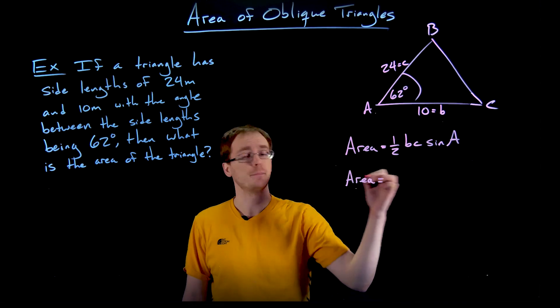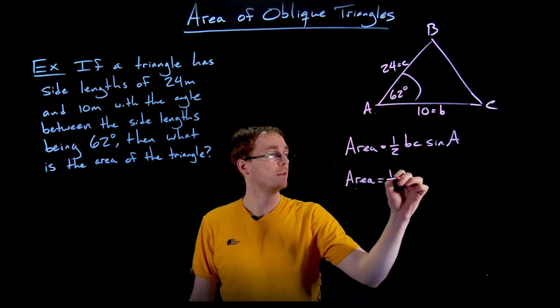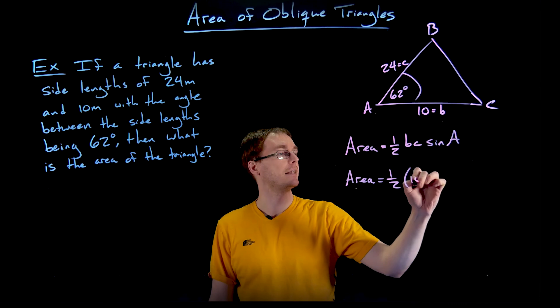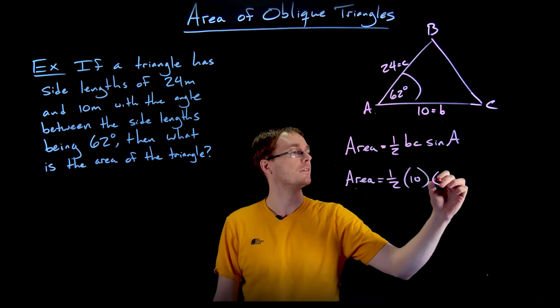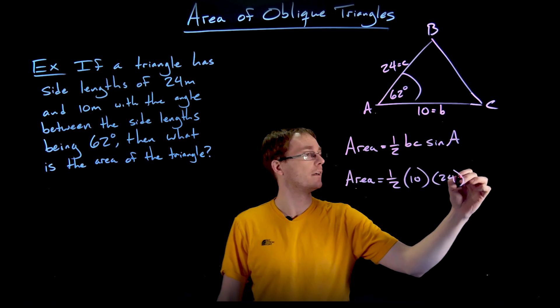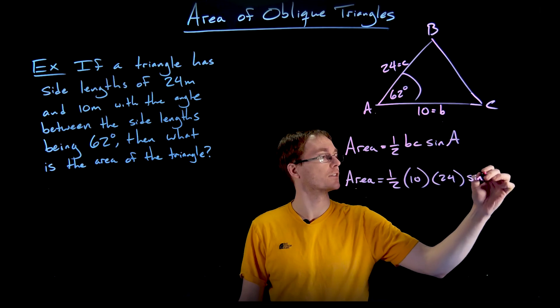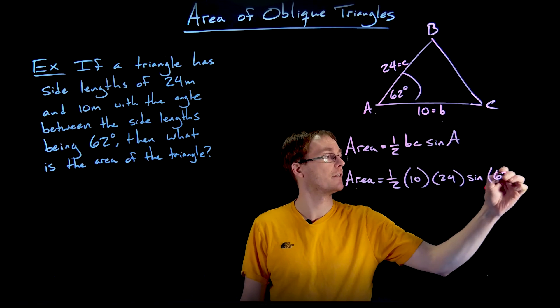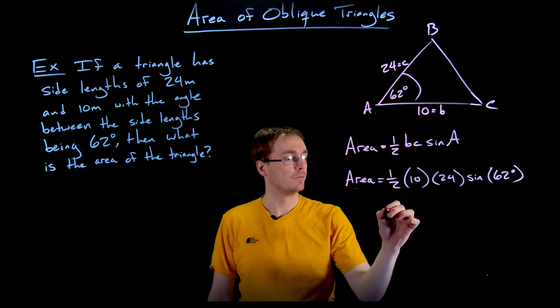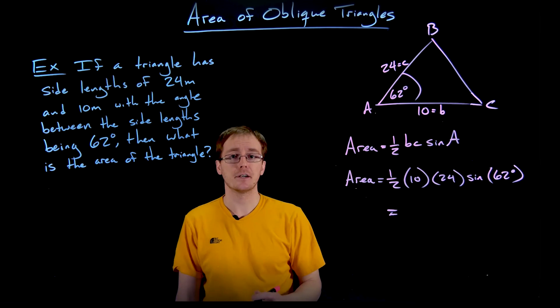So at this point, it's basically just a plug and chug problem. We've set everything up. We've identified what B and C are. They're 10 and 24, and the angle between them is the sine value we have to take, that sine of 62 degrees. So if we evaluate this expression using a calculator, and what we get out is a value of about 106.